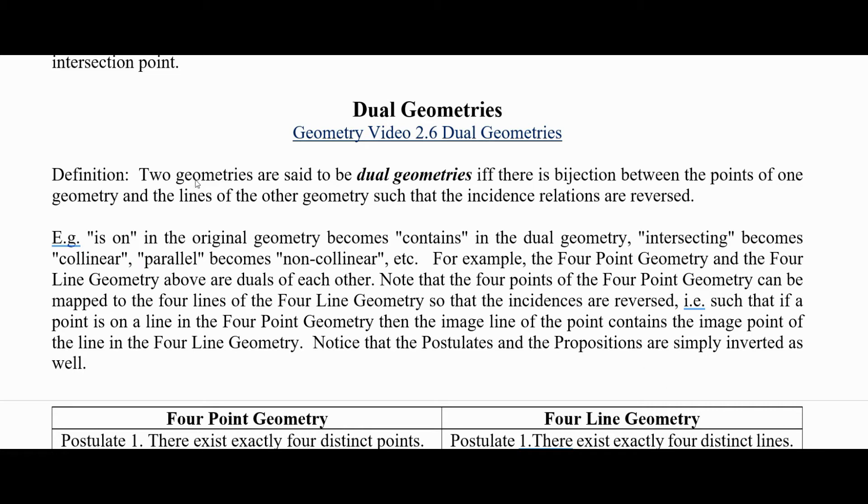So here's the definition. Two geometries are said to be dual geometries if and only if there is a bijection between the points of one geometry and the lines of the other geometry such that the incidence relations are reversed.